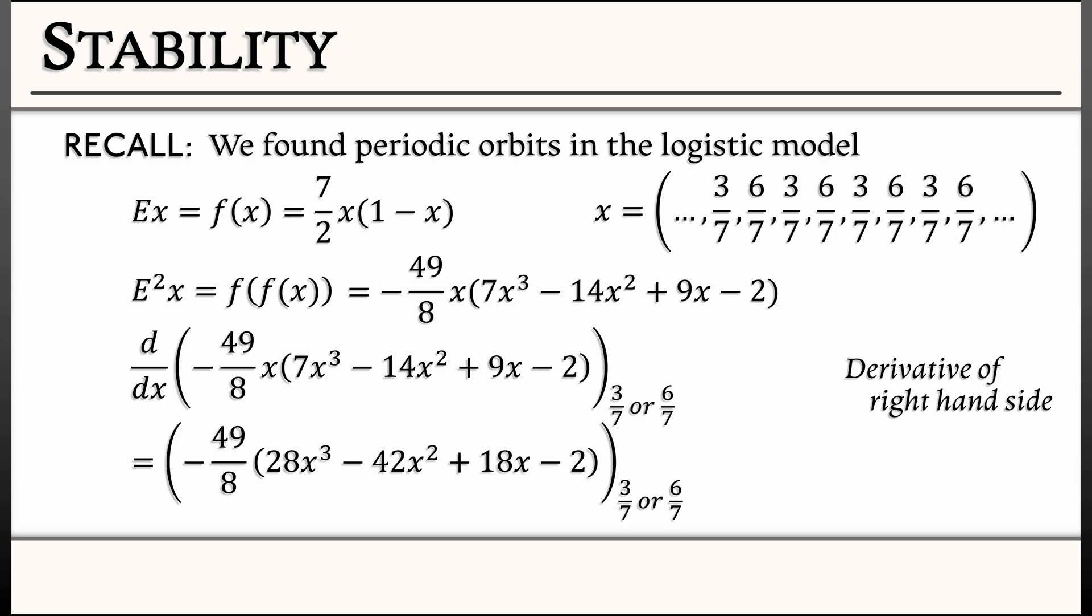Evaluate that at 3 sevenths or at 6 sevenths, either of the two points on the periodic orbit, and boom! You get the same answer, you get negative 5 fourths. Because that is greater than 1 in absolute value, you have an unstable periodic orbit of period 2.